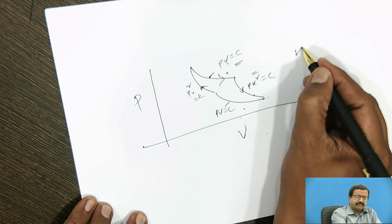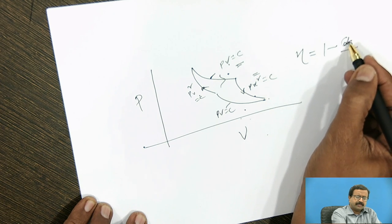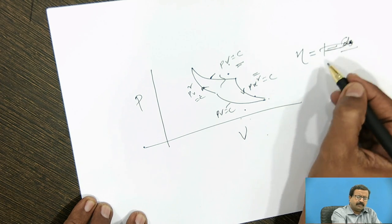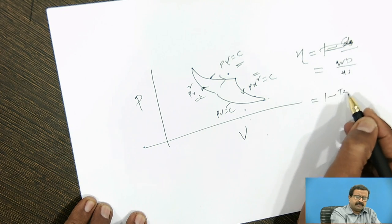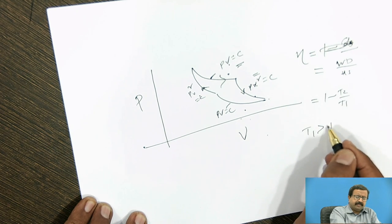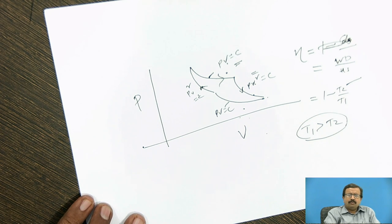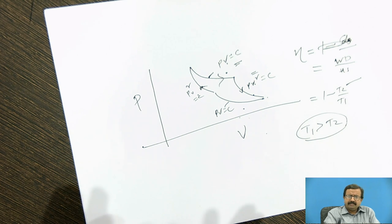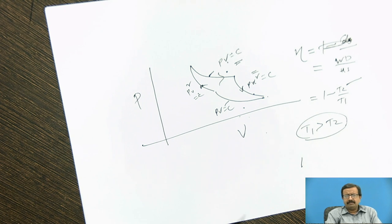If you find out the expression for the efficiency of a Carnot cycle using the same, that is work done upon heat supplied, you will get 1 minus T2 by T1, where T1 is greater than T2. And there is a limit that T2 and T1 are in absolute degree and we cannot have T2 equal to T1, then efficiency is 0, there is no work done. If T2 is equal to 0, that is absolute 0, we can get efficiency is equal to 1, which is not possible and that is perpetual motion machine of second kind is impossible. The detail about the machine and its application we will see in the next videos.